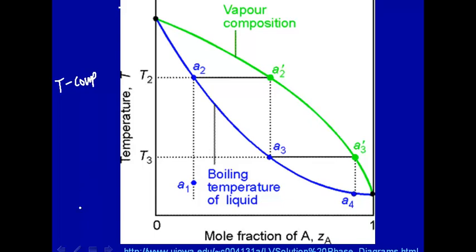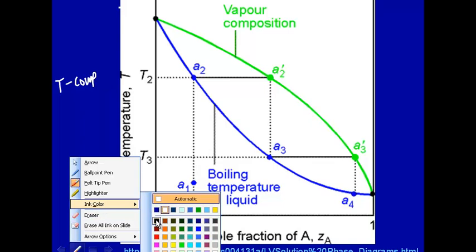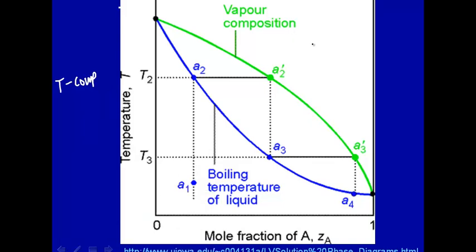Now with a pressure composition diagram, up here we had the liquid, down here was the vapor, and in here, this region, there were two phases existing simultaneously. For this temperature composition, it's reversed. Up here is the vapor, down here is the liquid, and in here you have a two phase system.